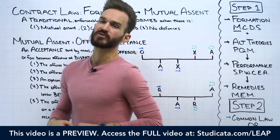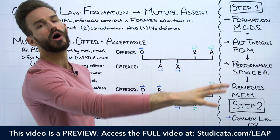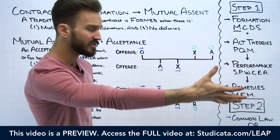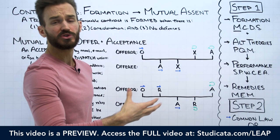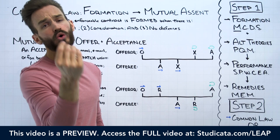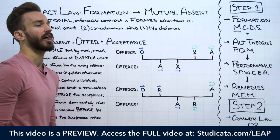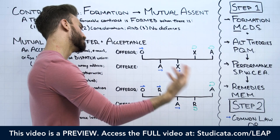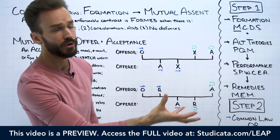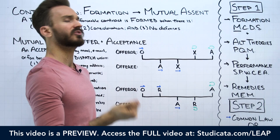Let's look at some examples. For these examples, let's assume that any acceptance being sent meets all the validity requirements — meaning the offeree has the power of acceptance, and the offeree is accepting in accordance with the terms established by the offeror, who is master of the offer. In your own analysis on a contract law fact pattern, you'd always want to double-check both of those elements. But here we'll focus on the timeline and the mailbox rule.